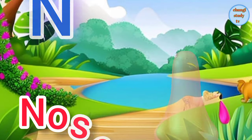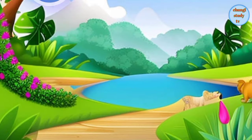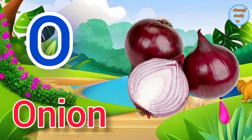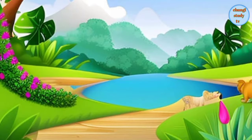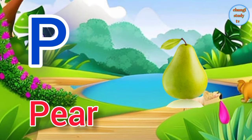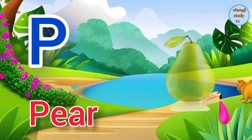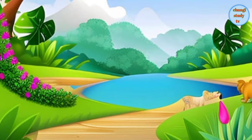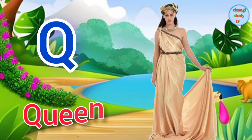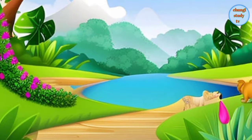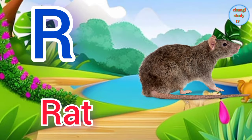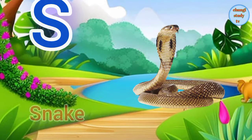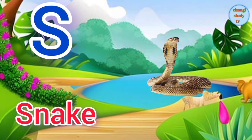N for nose. O for onion. P for pear. Q for queen. R for rat.